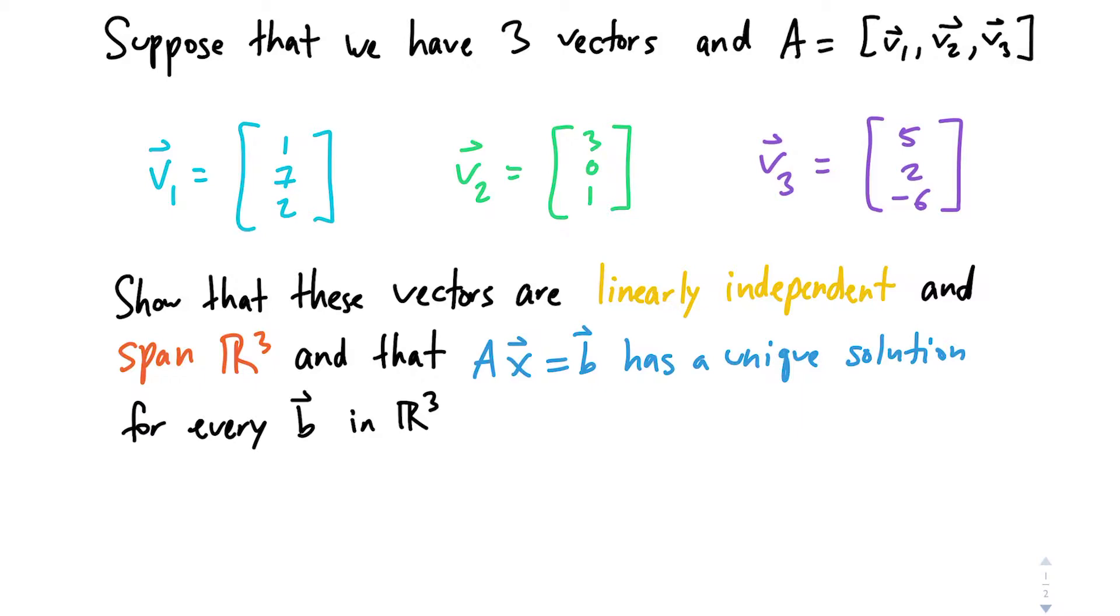So I kind of color-coded out the three different things we want to prove here, and you might be thinking to yourself, this is a lot, this is a lot to take in. How are we going to prove all three of these things?